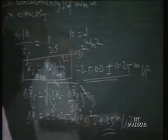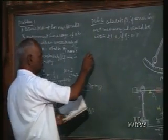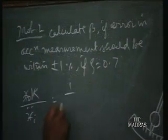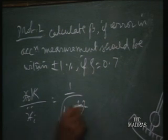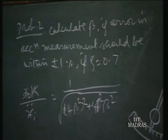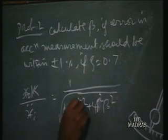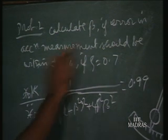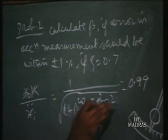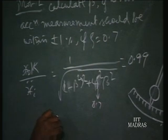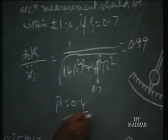For the second problem, the uncertainty is 1%, so the magnitude of x_o/K divided by x_i_double_dot equals 0.99. Using the equation: (x_o/K) / x_i_double_dot = 1 / sqrt((1 - beta_squared)_squared + 4 × psi_squared × beta_squared). Substituting psi = 0.7 and solving for beta gives beta ≈ 0.4. With this we close the chapter on acceleration measurement.